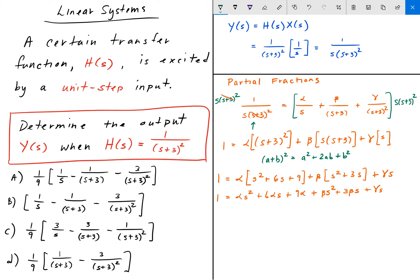So now we want to group these terms, group the s² terms and the s terms here. And lastly, we have just the regular constants. So when we group them, we get (alpha + beta)s² plus (6alpha + 3beta + gamma)s plus 9alpha.